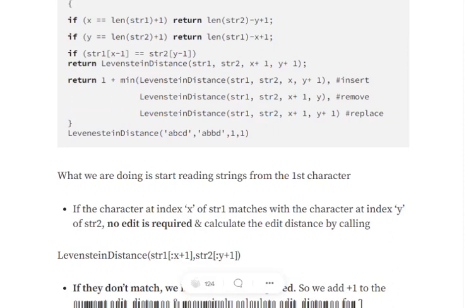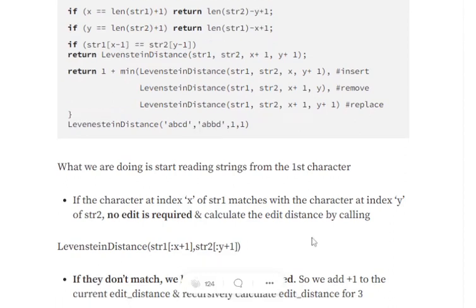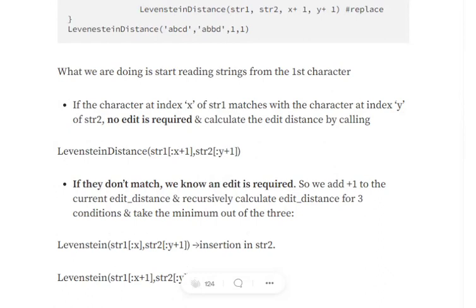So if the two characters at index x and index y match, we won't be adding anything to the edit distance and we would be performing this recursion operation. We would be moving to the next token without adding anything.